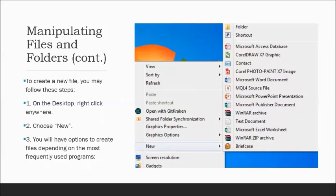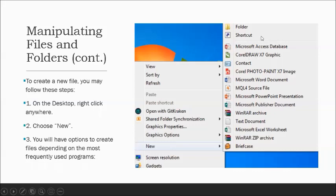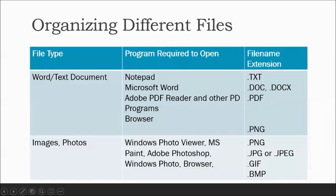To create a new file on the Windows desktop: right-click on the wallpaper, click New, and a menu appears with options including Folder, Shortcut, Microsoft Access, and other applications. The options that appear reflect the most frequently used programs installed on your computer.